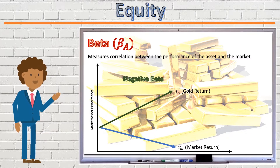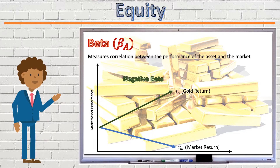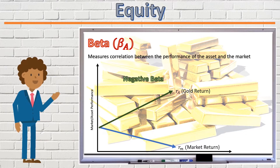Thus, gold is used to hedge against inflation and recession. In general, assets with low or negative beta values are used as hedging tools, as they don't move directly in line with the market, and therefore reduce the risk of a portfolio containing such assets.